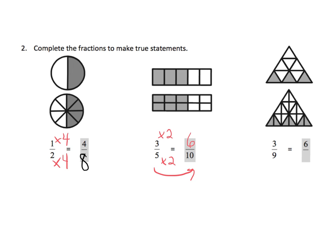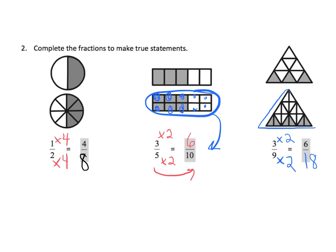Five times two is ten, so three times two is going to be six. And sure enough, if we count one, two, three, four, five, six, seven, eight, nine, ten — six out of ten are shaded in. And the last example: three times two is six, nine times two is eighteen. We could count this to verify that we actually have six out of eighteen that are shaded in.